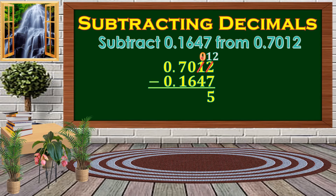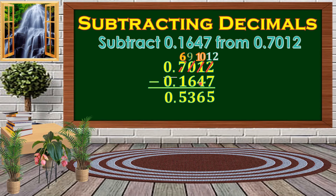Next, 0 minus 4 — 0 is less than 4 so we borrow again. We borrow 1 from the next digit, which is also 0, so we automatically borrow 1 from 7, making that 0 become 10, and since we borrowed 1 from it, it becomes 9. So 7 becomes 6. Then 10 minus 4 is 6, 9 minus 3 is 3, and 6 minus 1 is 5. Bring down the decimal point, and 0 minus 0 is 0.